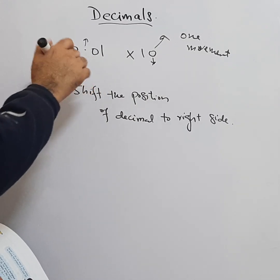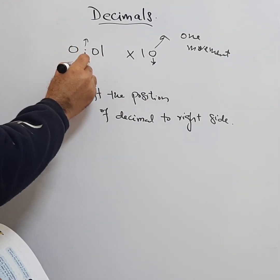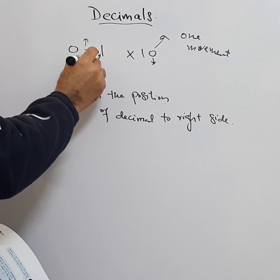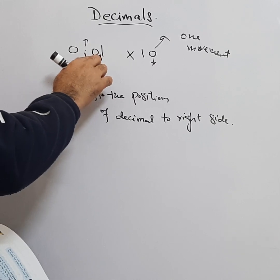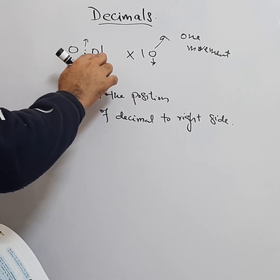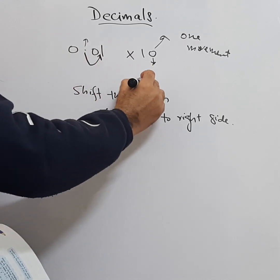We have to give it a movement. It will be moved from here, it will jump, it will escape this zero, make a jump, and come here. So it becomes 0.1.